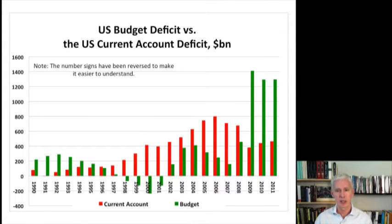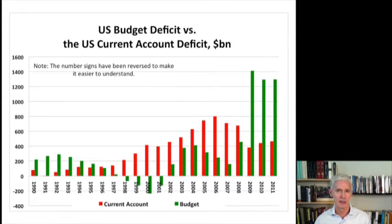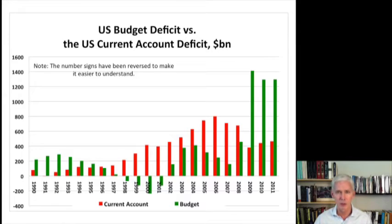Let's look at 2006. That was the year when the U.S. current account deficit was at its peak — $800 billion. That meant that in 2006, foreign central banks accumulated $800 billion. They would have liked to have invested those dollars into U.S. government bonds. But in 2006, the green bar — the budget deficit — was only a little more than $200 billion. So foreign central banks could have bought up every new government bond sold that year and still had almost $600 billion left over that they had to invest in other dollar-denominated assets.